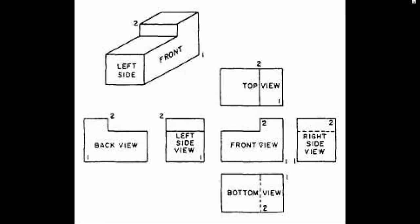The back side and front side of this object are exactly the same. If I wanted to describe this object in the fewest orthographic views, I don't need the back view unless something is different there. A top view, front view, and either a right or left side view would do — I don't need the bottom or back. If the edge from point two down to the front was sloped, I could show that in the front and top views and still only need three views.